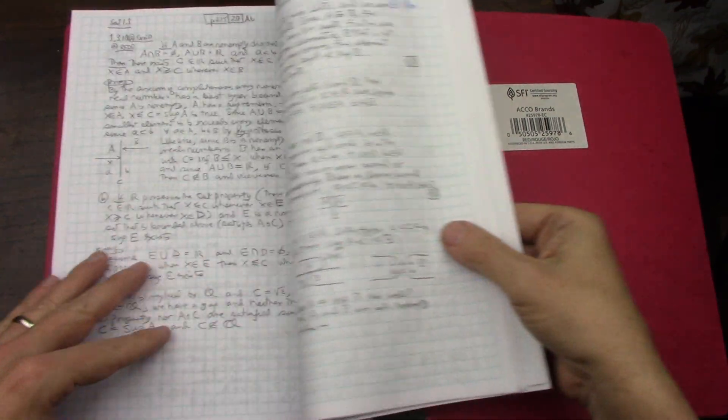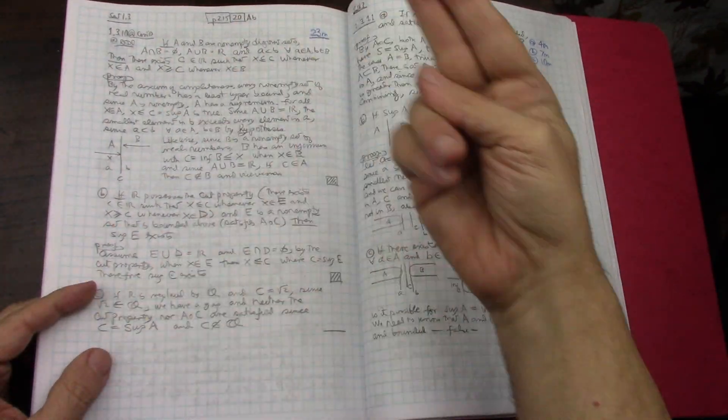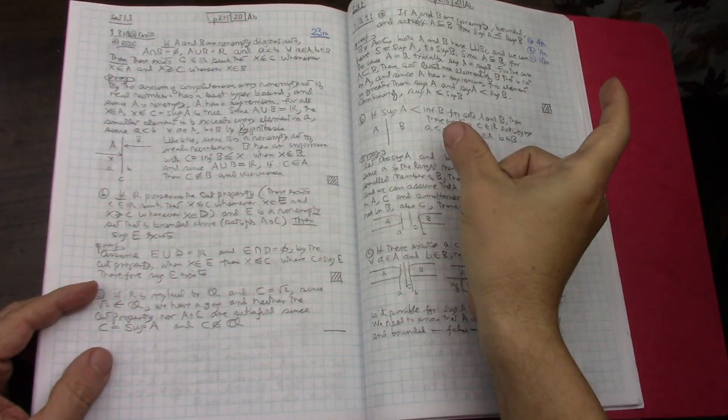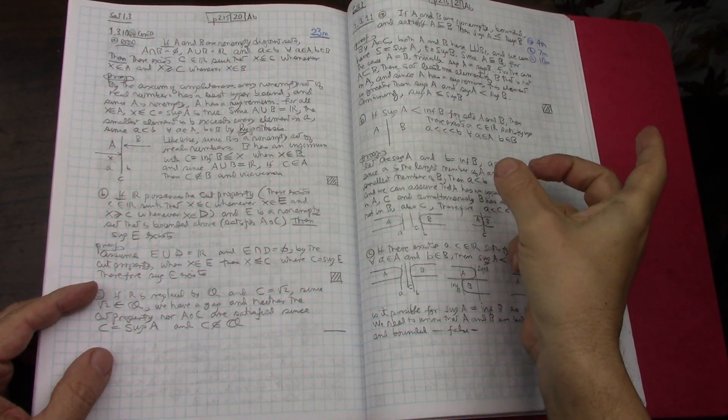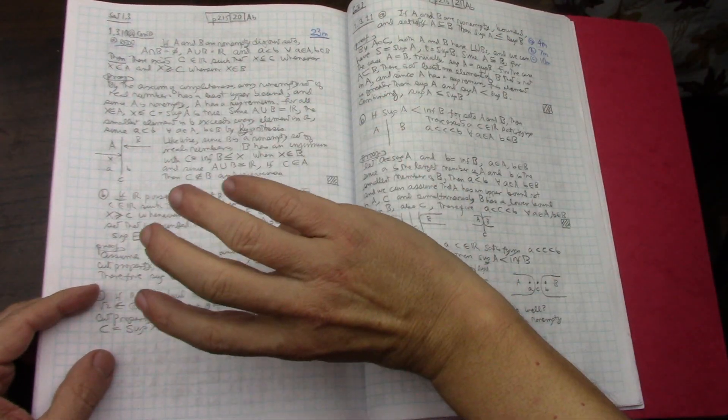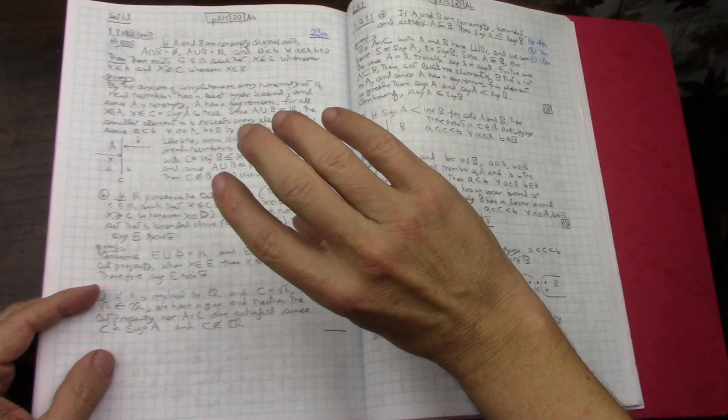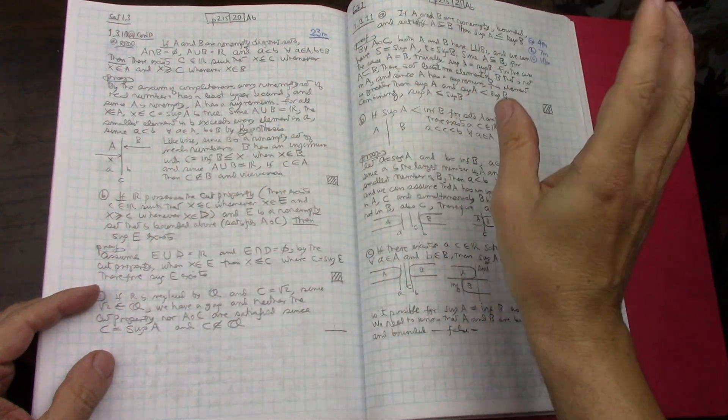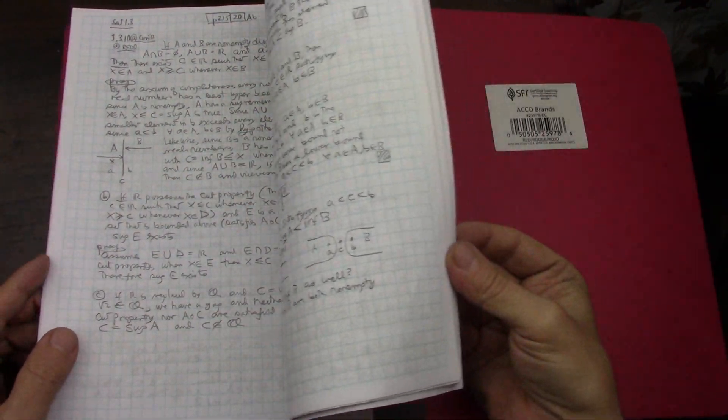So the next problem set that I will try is going to be all of chapter one Baby Rudin problems, and then I'll go back and start the next cycle, which is going to be all the point set topology ones, then all the sequences ones. And all together those, including Baby Rudin, it's a total of 10 different problem sets that I have ready for me to attempt.